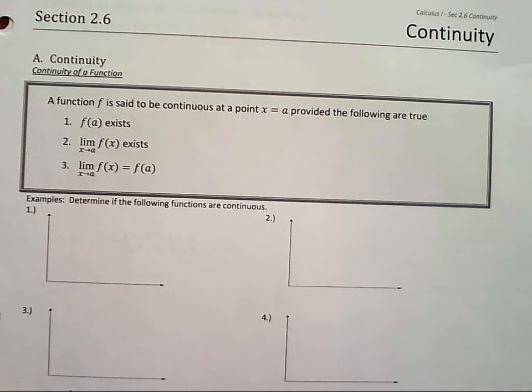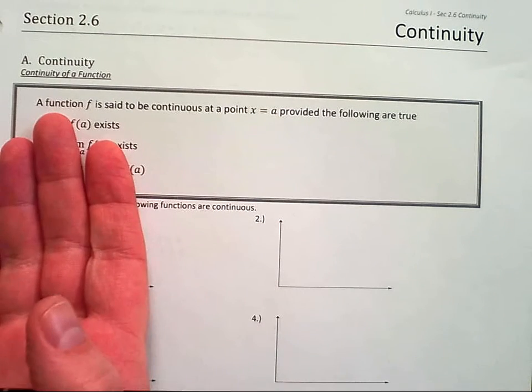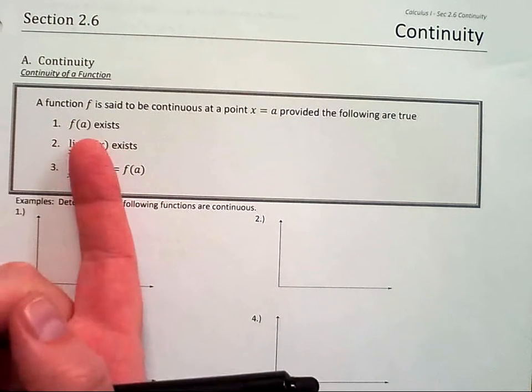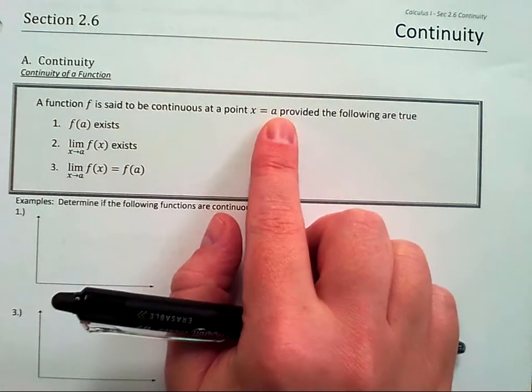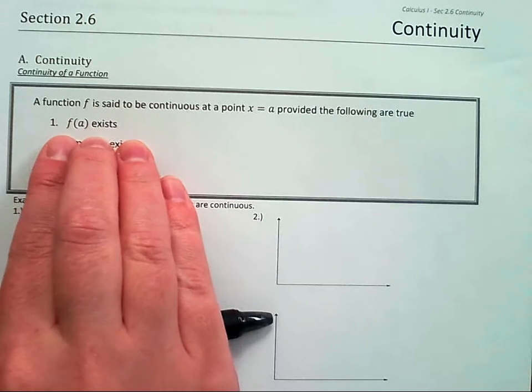Like a piecewise function like this, not continuous. So I always think of it too as I could draw it and trace it without lifting my pencil, right? So in the context of calculus, the definition for a continuous function: a function f is said to be continuous at a point x = a provided the following are true.